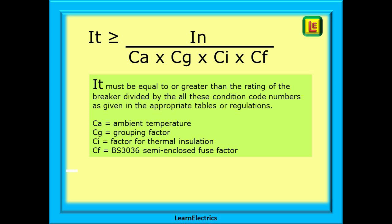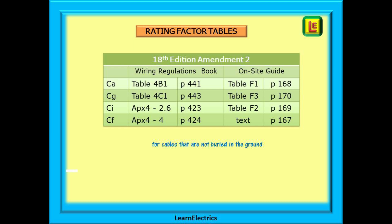This tells us that IT must be equal to, or greater than, the rating of the breaker divided by all these condition code numbers as given in the appropriate tables or regulations. The more common of these are CA for ambient air temperature, CG for grouping factor, CI is the factor for thermal insulation, and CF is the BS3036 semi-enclosed fuse factor. The table shown here lists these four rating factors and tells you where to find the relevant tables in the wiring regulations book and in the on-site guide. These tables are for cables that are not buried in the ground.